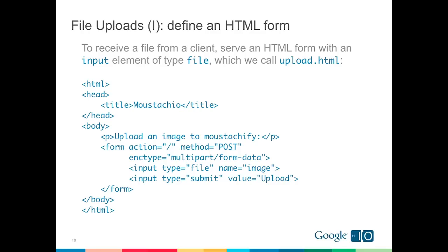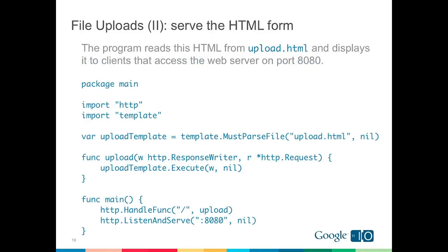Here's our simple HTML form — familiar to most. It's a simple HTML form with a multi-part form data encoding type and a file field named 'image'. To create an upload handler that displays that form, we import the template package and create a global variable upload_template, which is the result of calling must-parse-file on that template. In our new upload handler, we call the Execute method on that template to write it as the HTTP response, then register that handler to the web route in main.